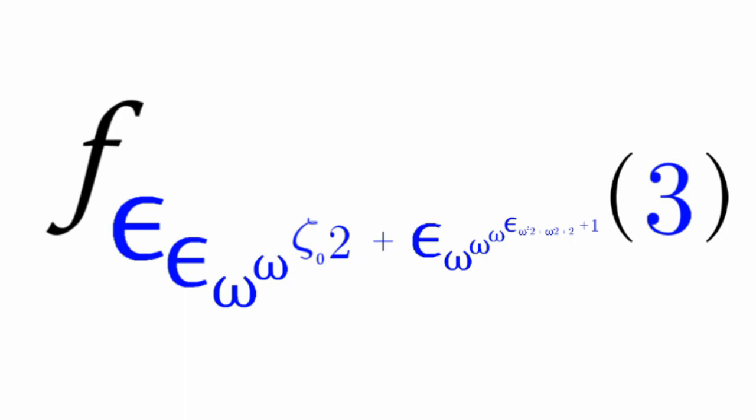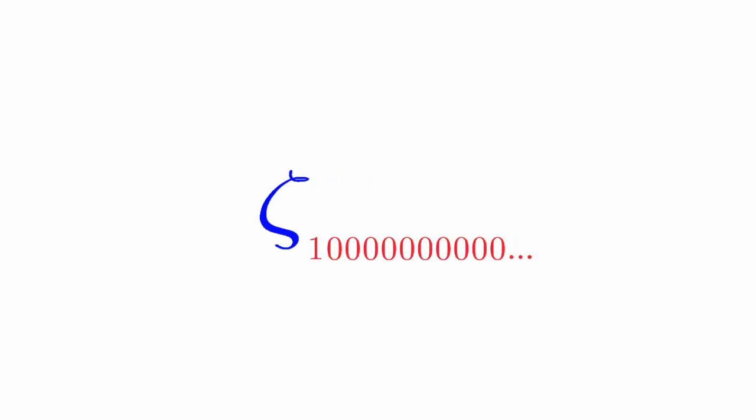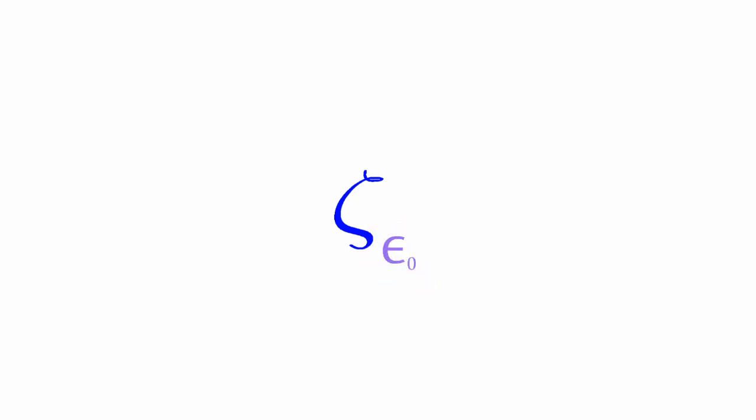But we can have zeta 2, zeta 3, zeta 4, and so on. We can even have omega as our index of zeta. We can also have epsilon naught as the index. We can even do zeta_{ζ₀}.